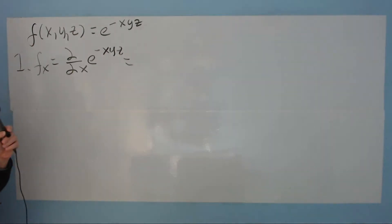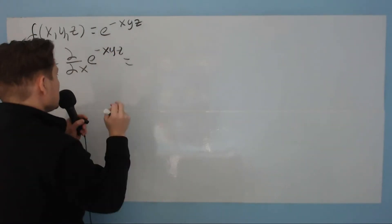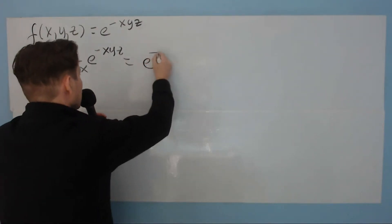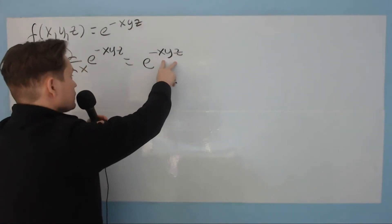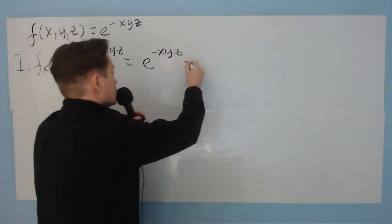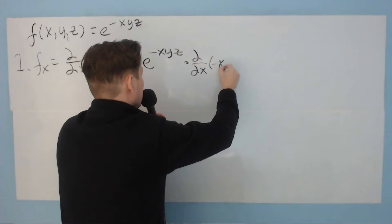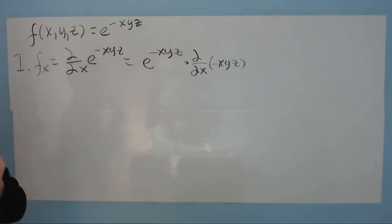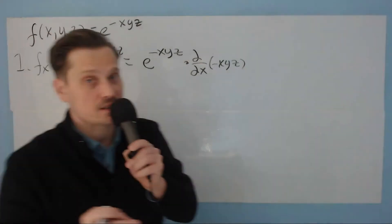What we do is model this based on the single variable calculus way, which says that you copy the expression — so you copy the e to the negative x, y, z directly. And then you multiply by the derivative with respect to x of the exponent. It's important to understand that because you have multiple variables involved, the y and the z are treated like numbers — like 5 and 10. They're constant, basically.